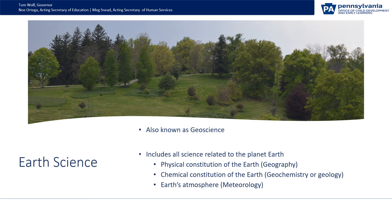Earth science, also known as geoscience, includes all science related to the planet Earth — things like geography, geochemistry, meteorology. Geography talks about continents, rivers, mountains. Geochemistry talks about rocks, minerals, and soil. Meteorology talks about weather and climate. Make clouds, chart daily weather, or make chocolate rocks to show melting.